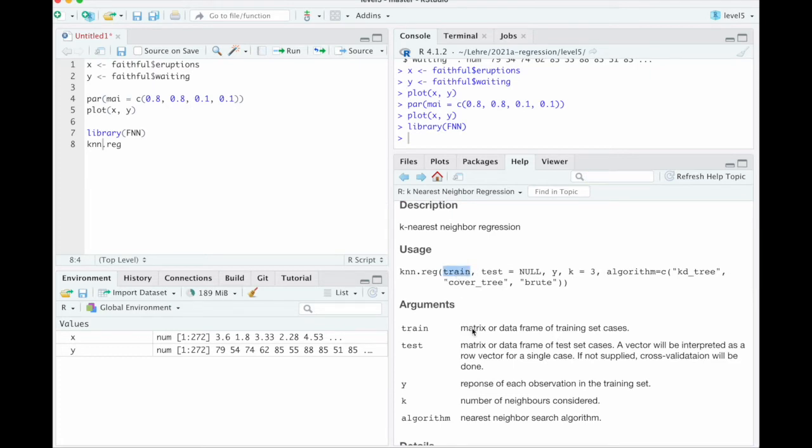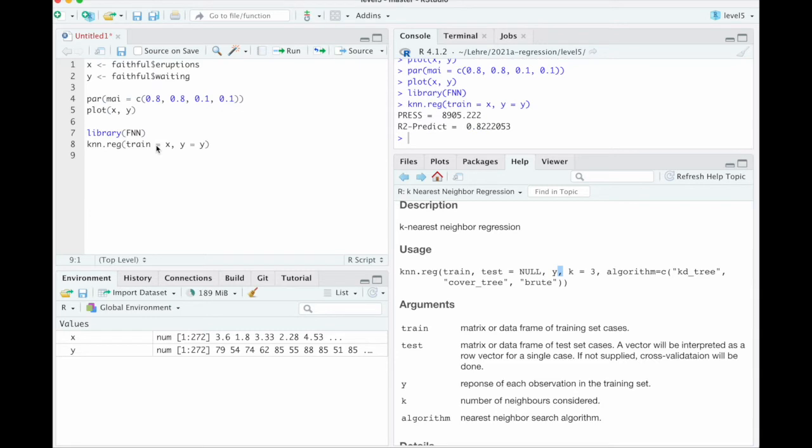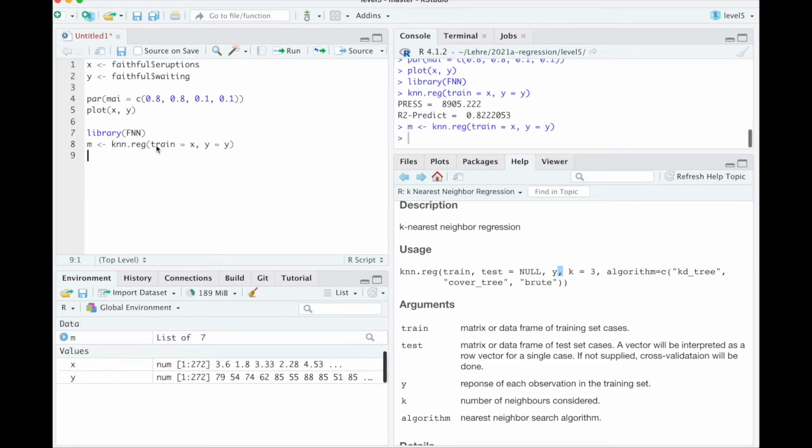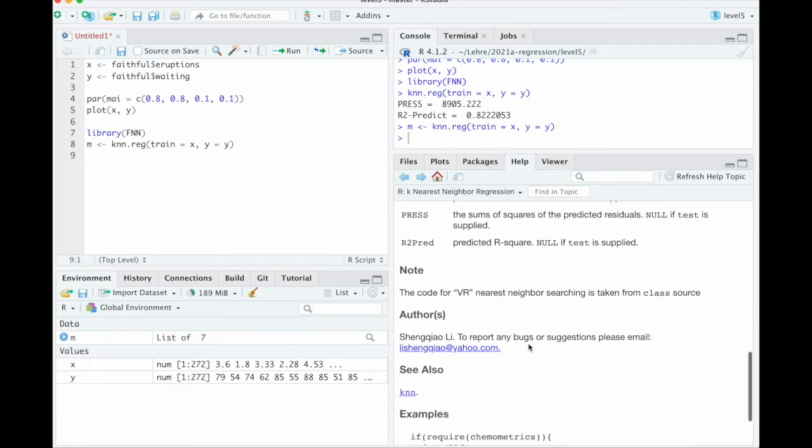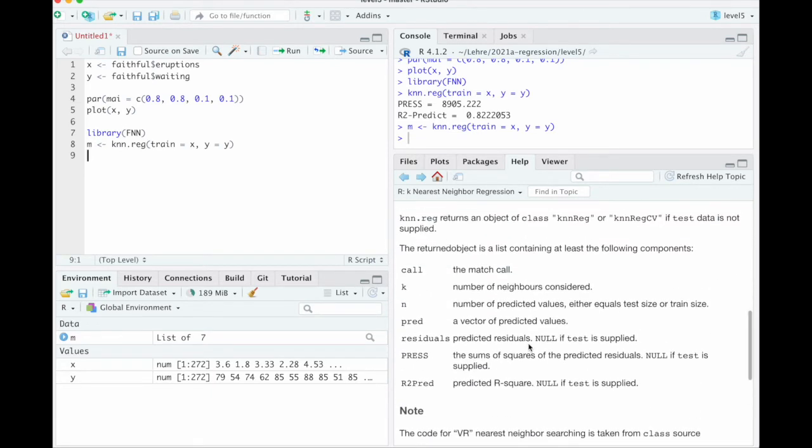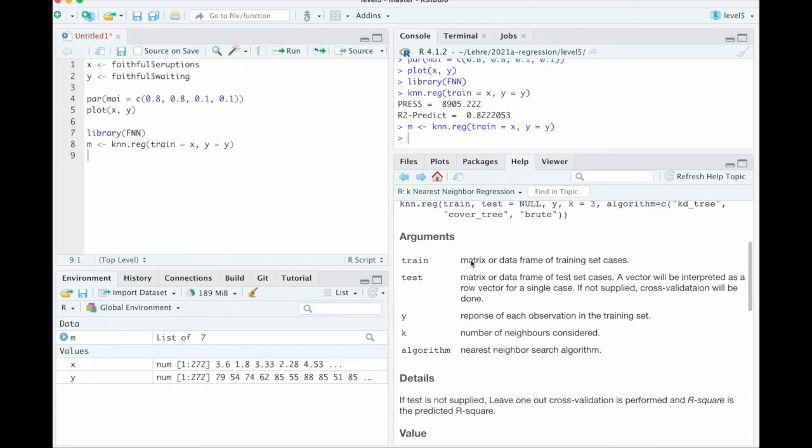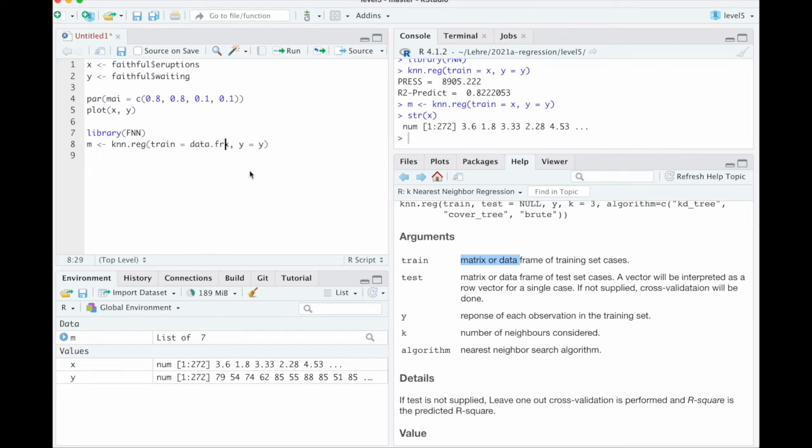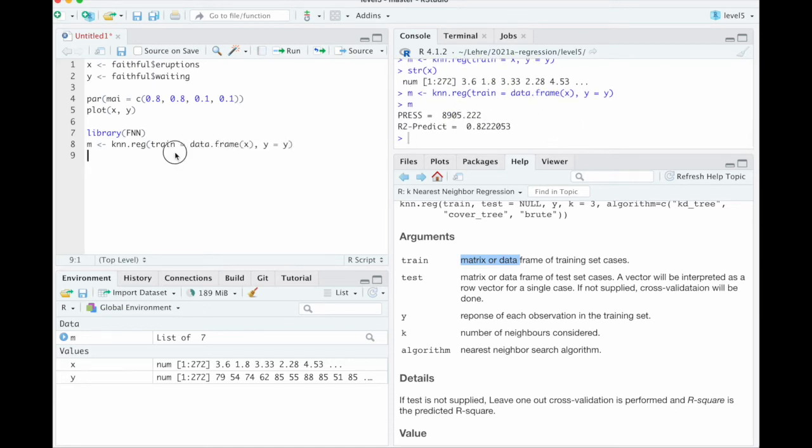Good. Now we need to understand how that is done. So train is a matrix or data frame of training set cases. And here y is the response of each observation in the training set. So I assume we plug in the x here and the y here. Let's try that. So train is x and y equals y. That did something. So let's call that m. And now I would like to add this to the plot. So we need to understand what does m do. The returned object is a list. I just wonder whether we did this right. Because our x is a vector, let's actually convert that to be sure. That looks the same. I don't think we changed anything.